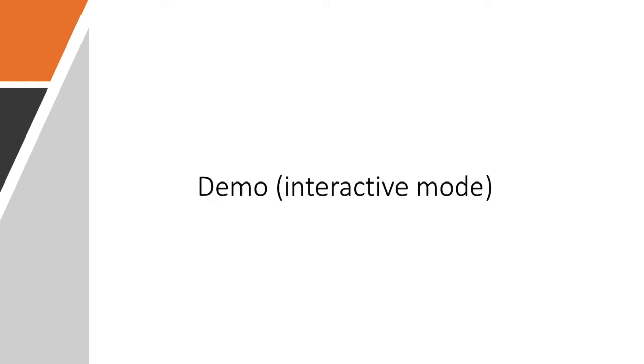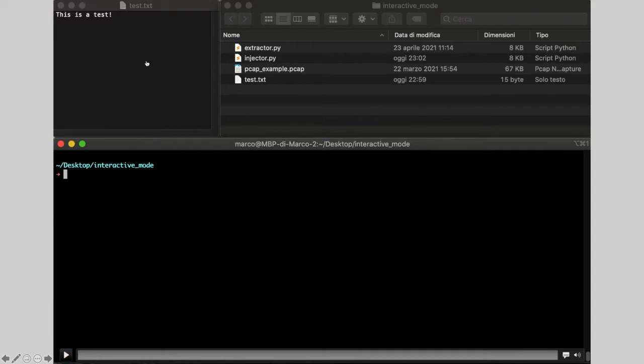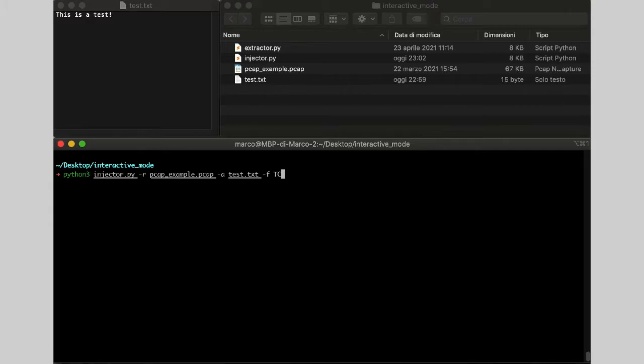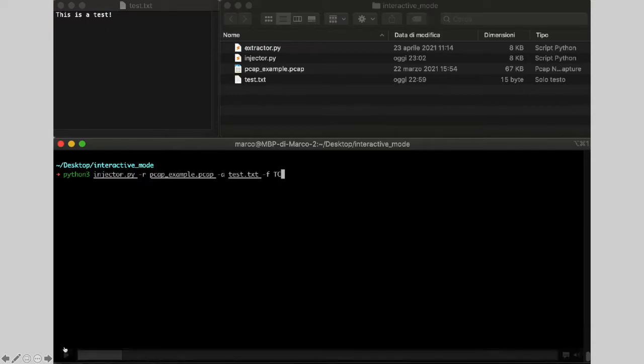So, now I want to show you how interactive mode and the bulk mode works. So, let's start with the first mode. Here, I want to inject a secret file which contains 'this is a test' string. So, I'm launching the injector.py script which takes the input pcap file. That is pcap_example.pcap. The attack to inject which is the test.txt file. And the field that I want to target.